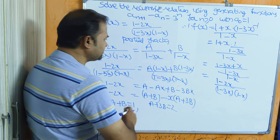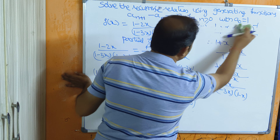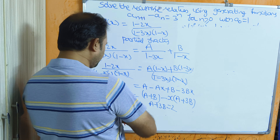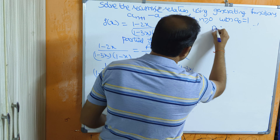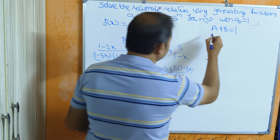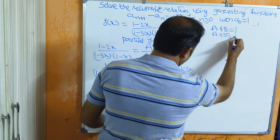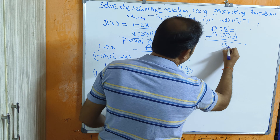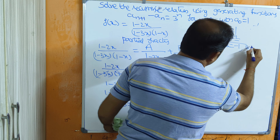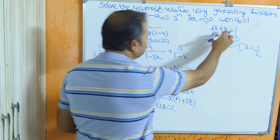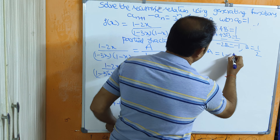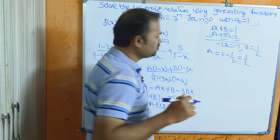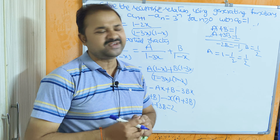From the two equations, A plus B equal to 1 and A plus 3B equal to 2, subtracting gives minus 2B equal to minus 1, so B equal to 1/2. Substituting back, A equal to 1 minus 1/2, so A equal to 1/2. Therefore both a and B equal 1/2.